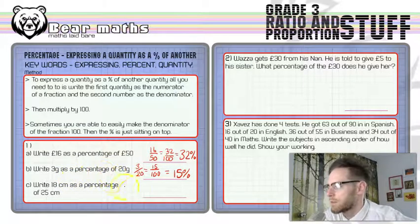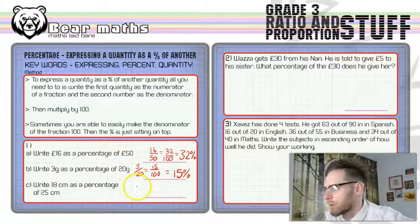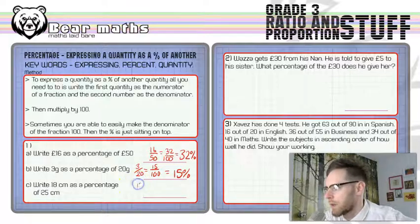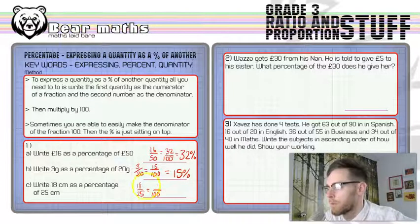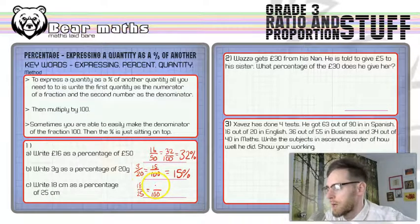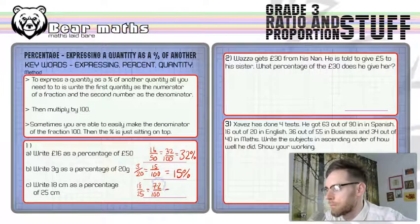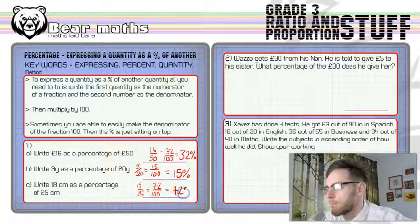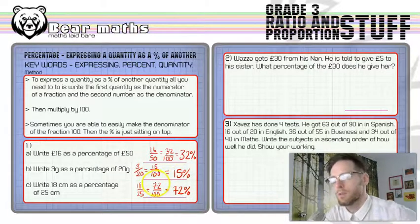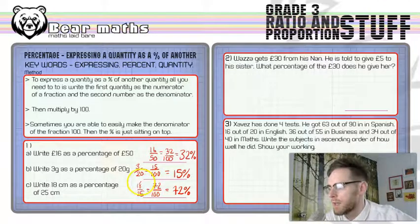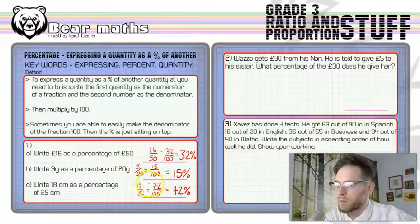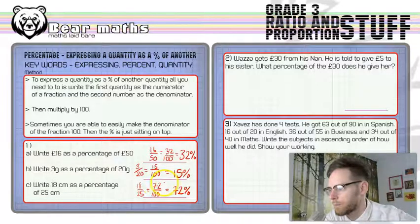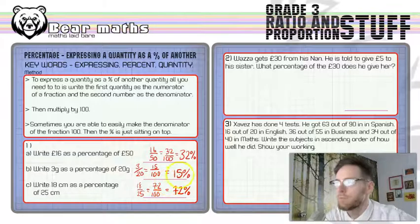And writing 18 centimetres as a percentage of 25, again, another one that we're able to do without a calculator because you're 18 out of 25. All you have to do is multiply by 4 to make it 100 on the bottom. So you multiply by 4, it's going to be 40 plus 32, which is 72, so 72%. And just in case you were wondering what I was doing there, I just did 18 times by 4, I did 10 times by 4 and 8 times by 4, and added the answers together.